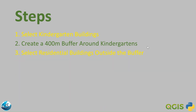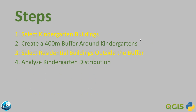Third, select residential buildings outside the buffer: create a function called select_residential_outside_buffer that takes a QGIS layer, a residential type, and the buffer geometry as input, and returns a new layer with the selected residential buildings outside the buffer. Fourth, analyze kindergarten distribution: create a function called analyze_kindergarten_distributions that takes a QGIS layer and a threshold, and returns whether the number of kindergartens is sufficient or not.